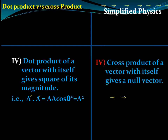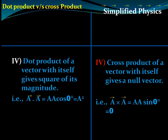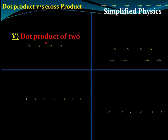The cross product of a vector with itself gives the null vector. Since a×a = a·a·sin0°·n̂ and sinθ = 0 for the same vector, the cross product of a vector with itself is the zero or null vector.